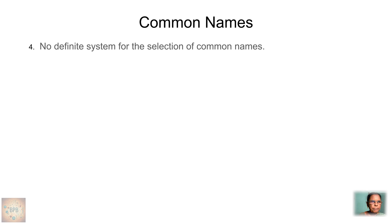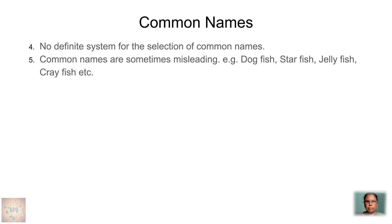The fourth drawback is that no definite system was followed to select common names — there were no fixed norms for their selection. The fifth drawback is that common names are sometimes misleading. Examples include dogfish, starfish, jellyfish, and crayfish.